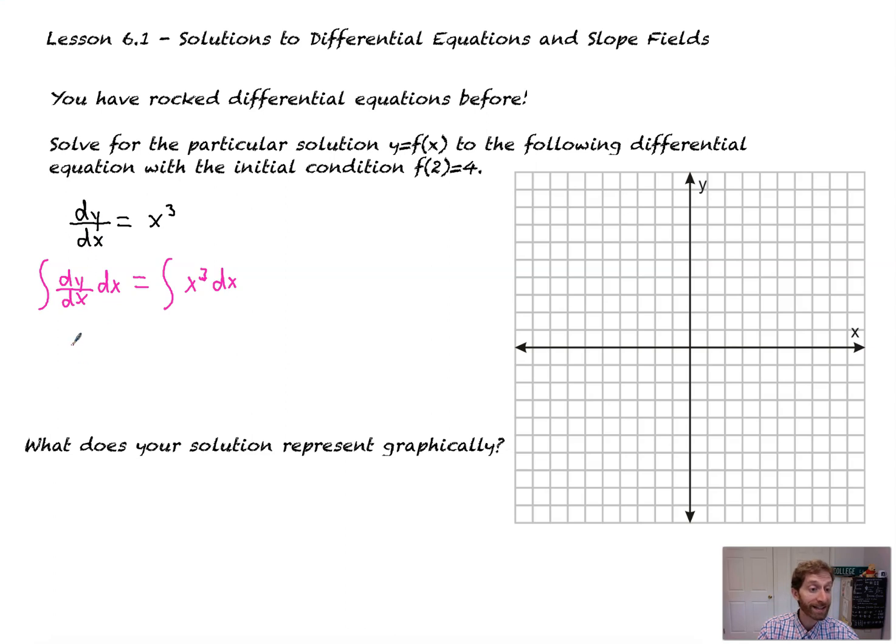The anti-derivative of dy dx is y, right? The function that comes before the derivative of y is y. Now that's equal to, this will be x cubed dx. So this will be x to the fourth over 4 plus c. Just normal anti-differentiation. Nothing new there, right? Totally handleable, if that's a word.